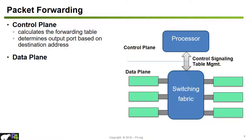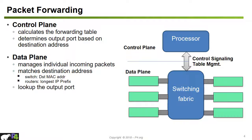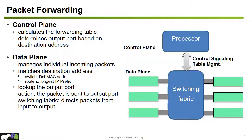In addition to the control plane, the data plane inside the switch manages each individual incoming packet. For each packet coming into a port, it looks up the destination address — for example, a switch looks at the destination MAC address, and routers look at the longest IP prefix — and based on that destination address, they look up in their table which outgoing port to use. The switching fabric inside the switch then directs the packet from the input to the output port very quickly.